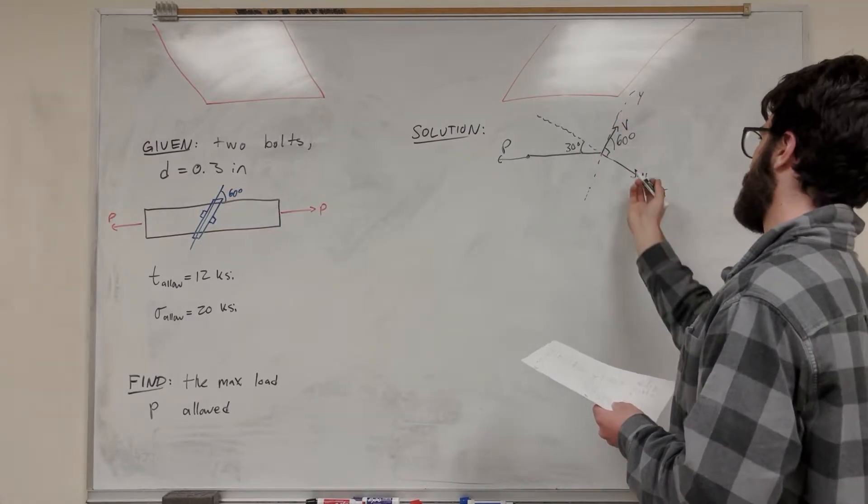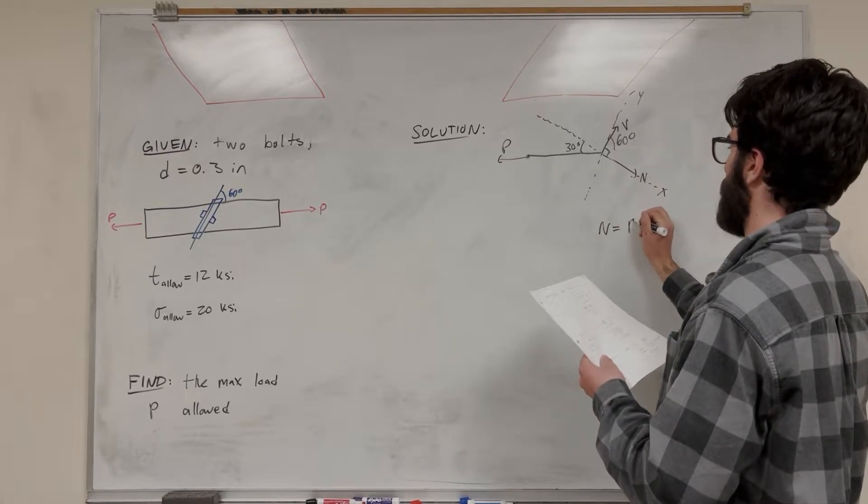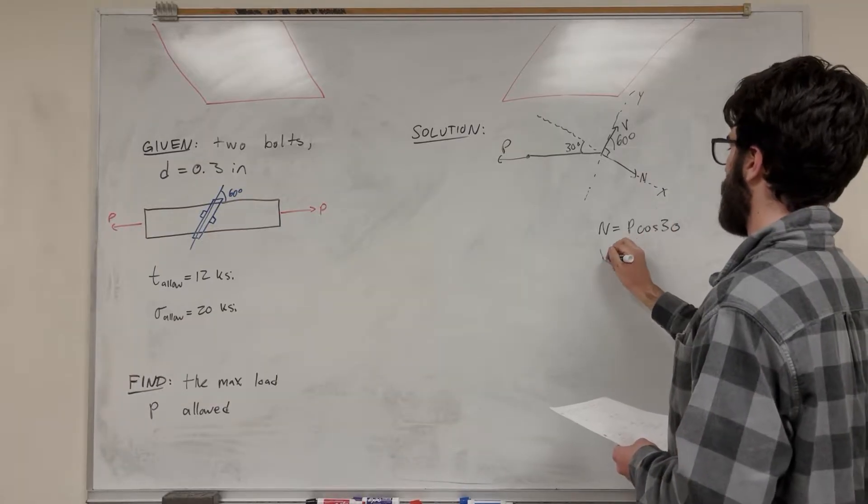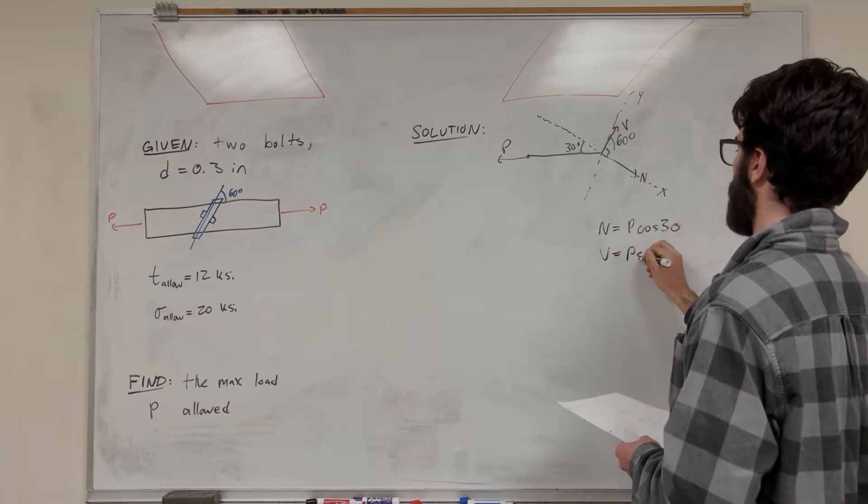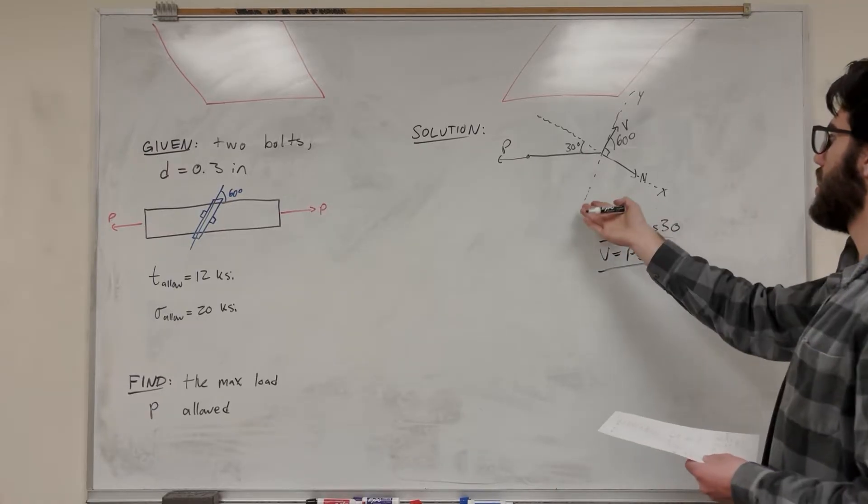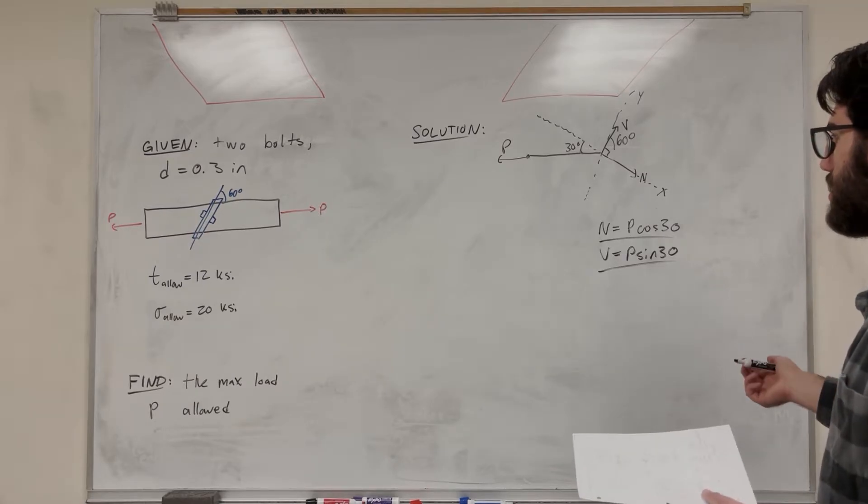And it's going to be really easy to see that normal is equal to P cosine of 30, and V is equal to P sine of 30. So however you want to get there is good, but I recommend just making a normal and tangent component for a force body diagram, makes it a lot easier to do.